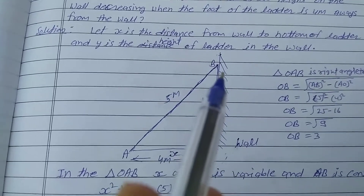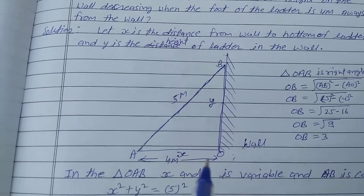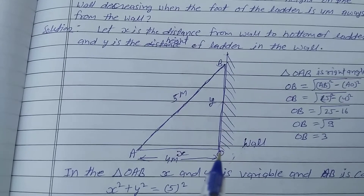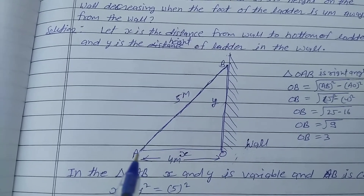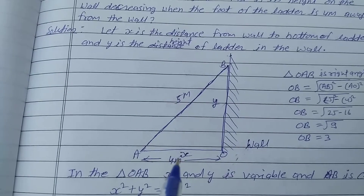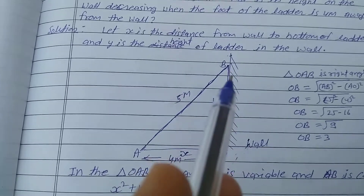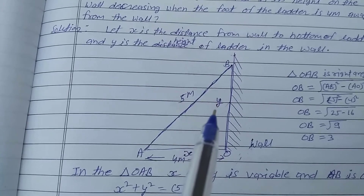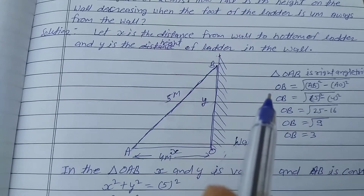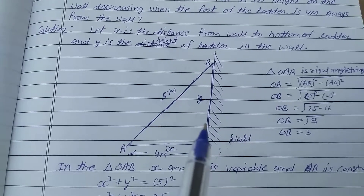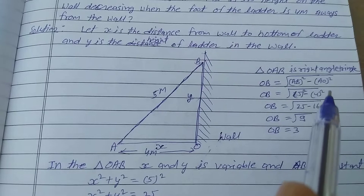That is the wall, and AB is the ladder. The ground distance from the wall to the bottom of the ladder is 5 meters — that is x — and the height of the ladder on the wall is y. The ladder length is 5 meters. This forms a right-angle triangle, so triangle OAB is a right-angle triangle.